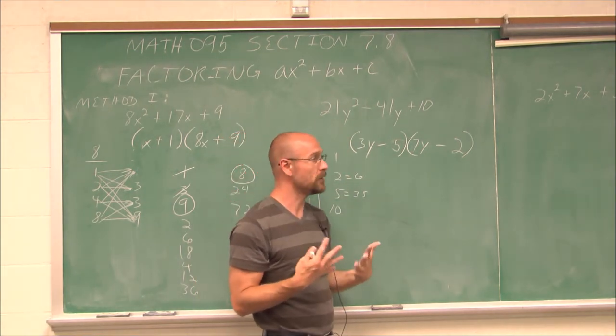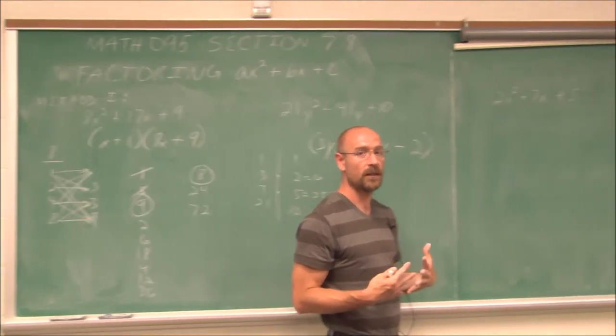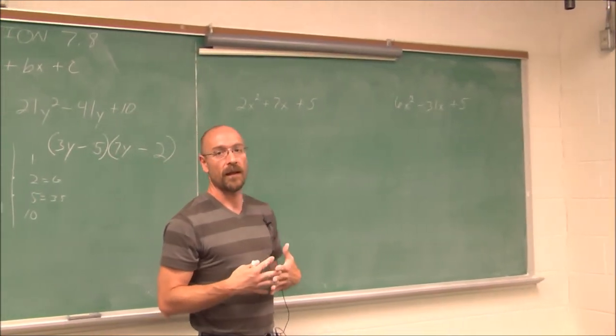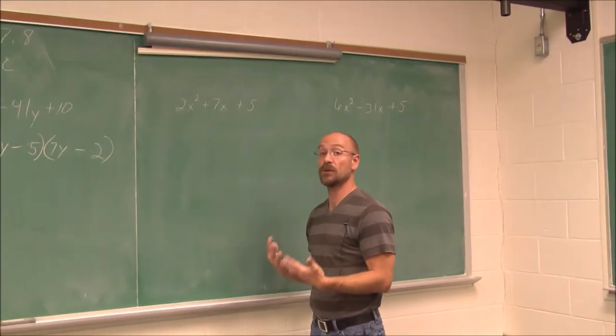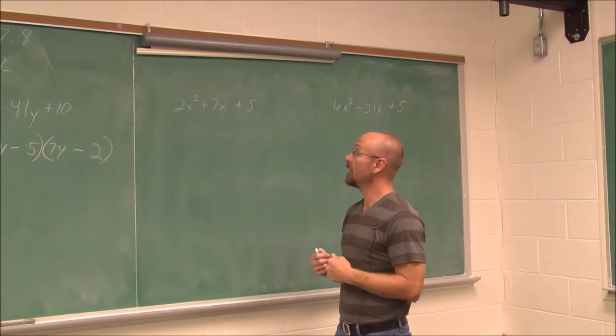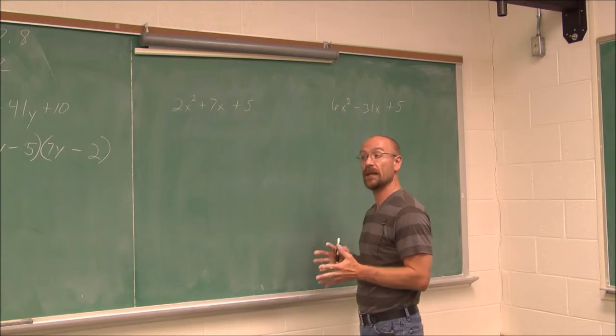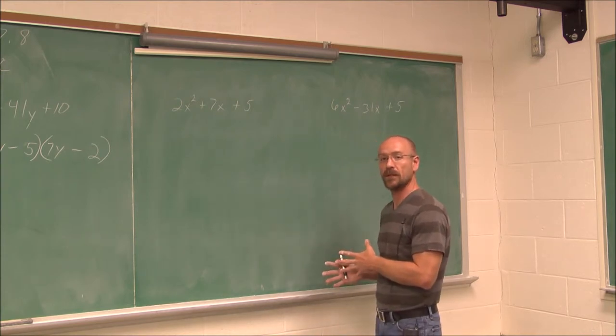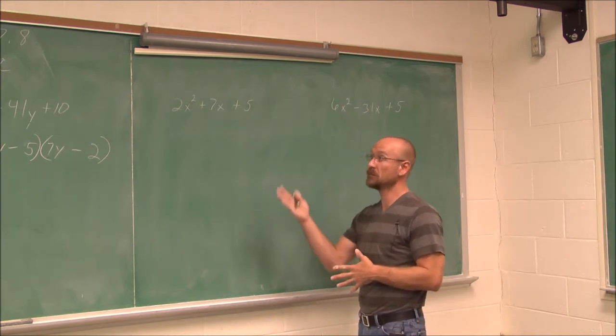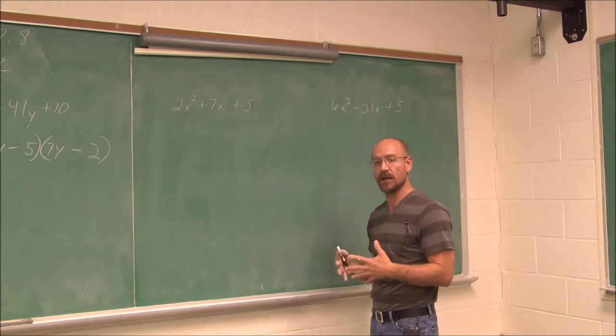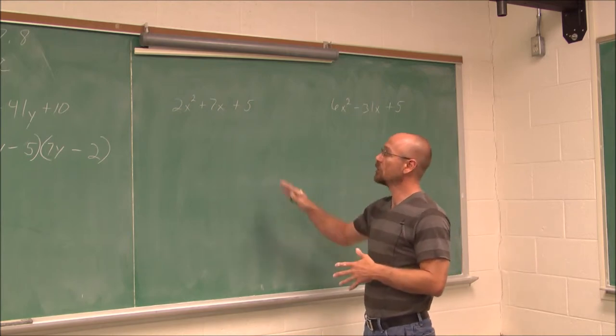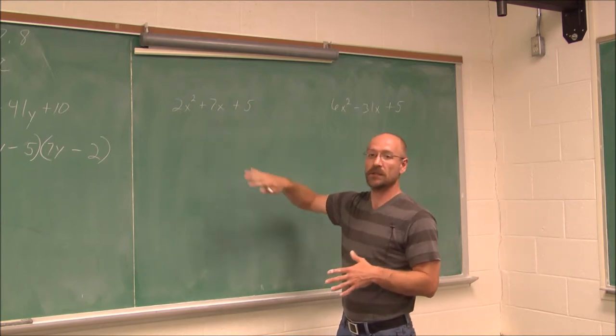Now, hopefully trial and error, it does work. But there's a second method. And I personally prefer the second method. I think it's a little bit quicker of a method. It's called the AC method. And sometimes it's called the AC method factor by grouping. In the last section, 7.7, we learned how to factor by grouping. So what we're going to do here is we're going to take A times C.